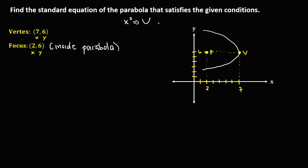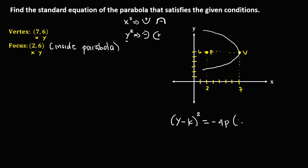For the standard equation: if x squared, the parabola opens upward or downward; if y squared, the parabola opens to the left or to the right. Since the parabola opens to the left, the standard equation uses y squared, and the formula is (y − k)² = −4p(x − h).